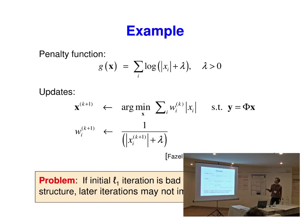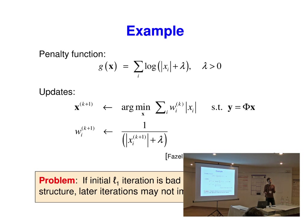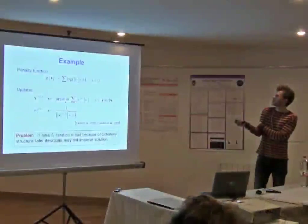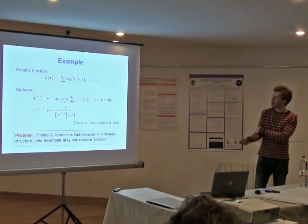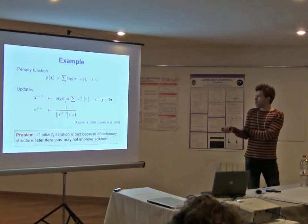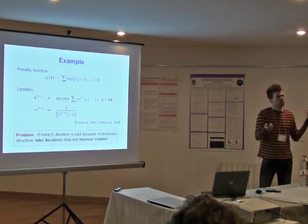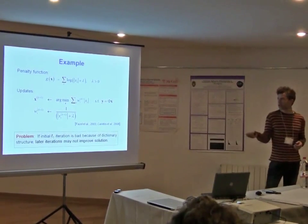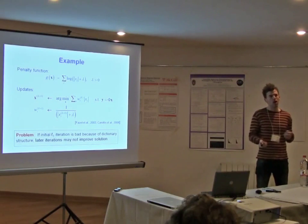Here's the most common penalty function used for reweighted L1 minimization. There's a parameter you can choose — you can set it with a continuation method or just pick a fixed value. The update rules become an L1 problem with some weights that start equal to 1, so the initial iteration is just regular basis pursuit. At each iteration you compute the weights via a formula based on a first-order Taylor series approximation — essentially computing the gradient. You iterate these until you get to a local minimum. But if the initial L1 iteration is bad because of dictionary structure, there's no compensation in this weight update, and the solution never changes from the regular L1 norm solution. It just gets stuck.